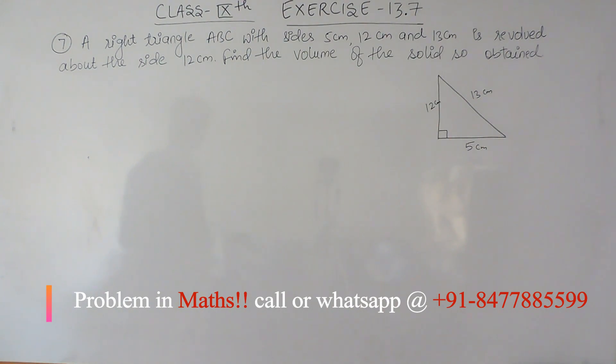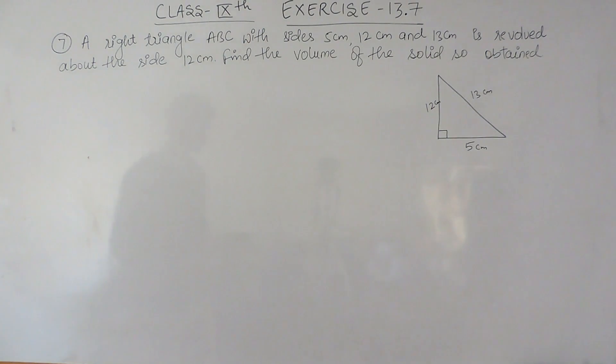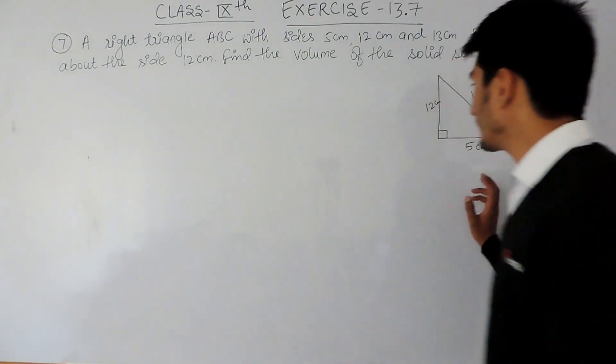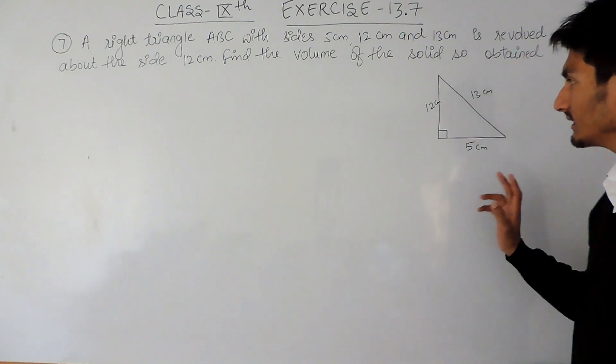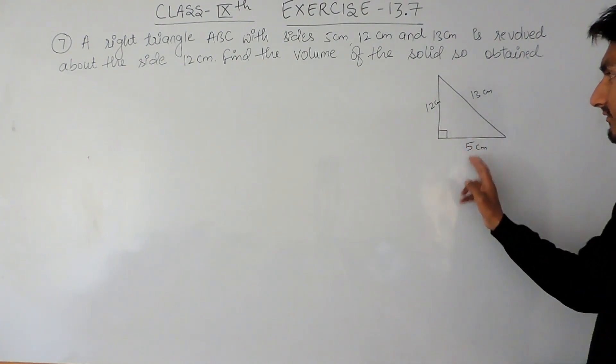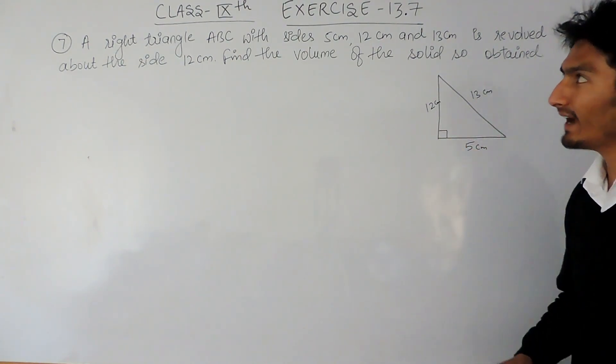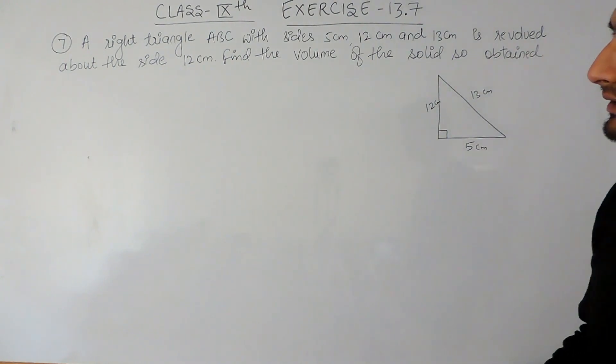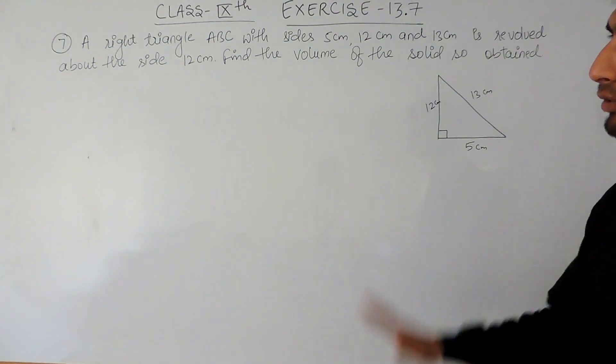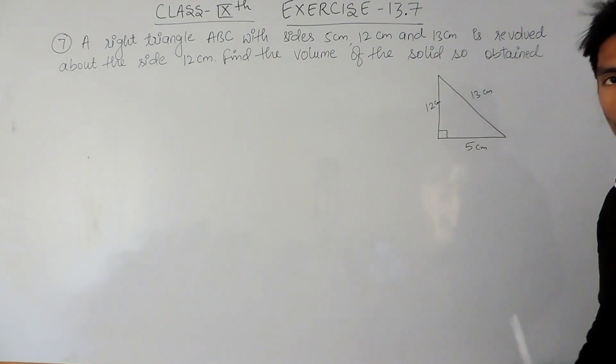Now we have our right angle triangle. The sides of this right angle triangle are 12, 5 and 13, and you have to revolve this triangle about the side 12 centimeter.